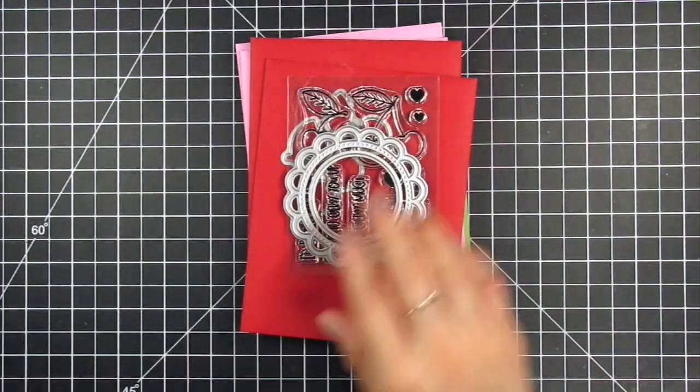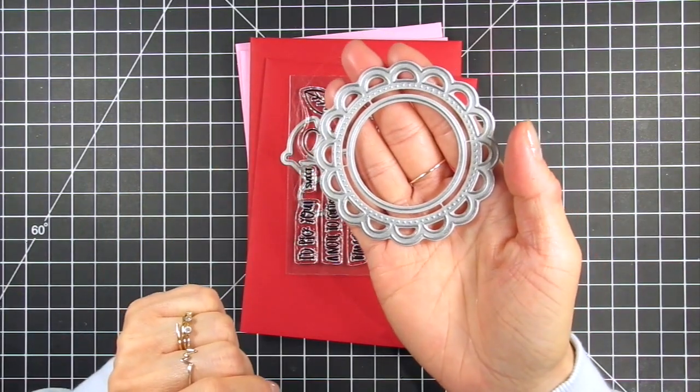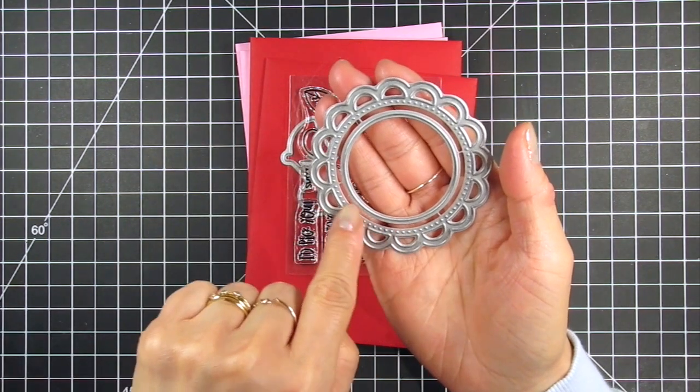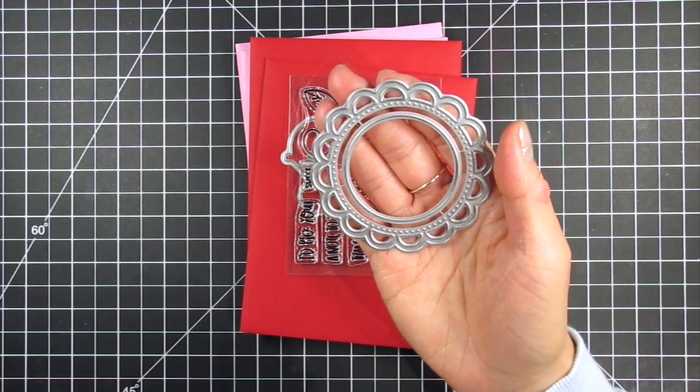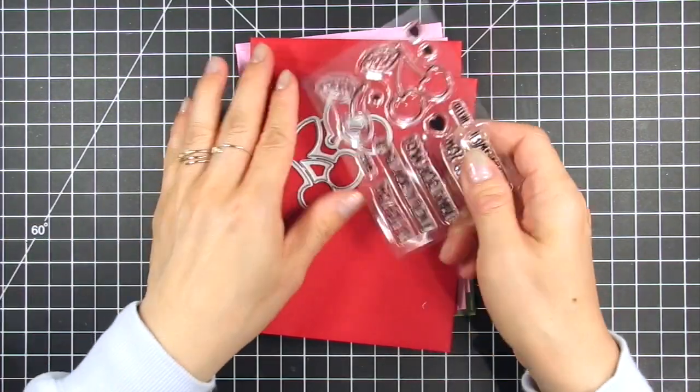This is the open scalloped circle and it consists of two dies. It creates a beautiful scalloped frame that looks like a flower. It has piercing along the outer rim of the main die and then there's a smaller die in the center that you can use to cut a window for a recessed sentiment or image or to create a shaker.